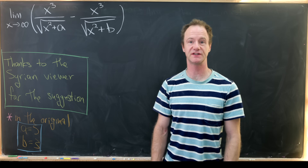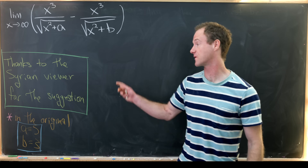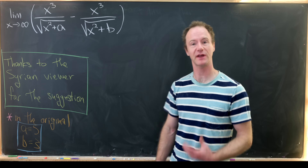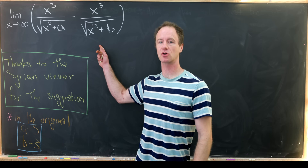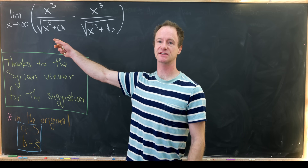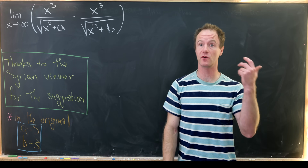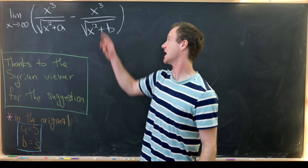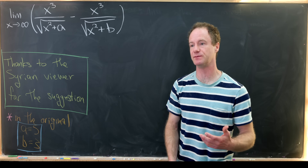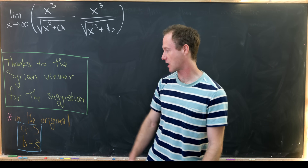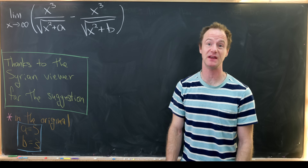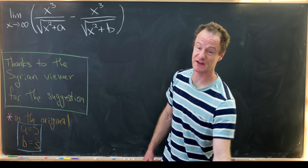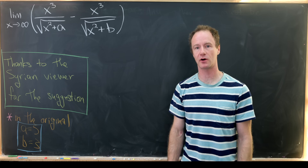Today I've got a nice limit which was suggested by a viewer from Syria, and I've actually changed the problem just a tiny bit to generalize it. Our goal is to find the limit as x goes to infinity of x cubed over the square root of x squared plus a, minus x cubed over the square root of x squared plus b. In the original problem, a was equal to 5 and b was equal to 3, although this generalization doesn't really make the problem that much harder.